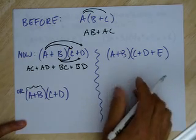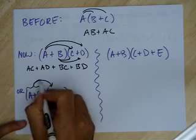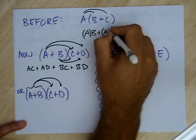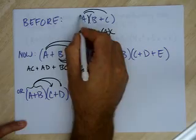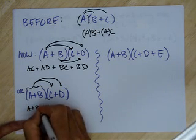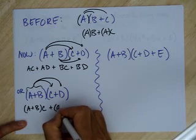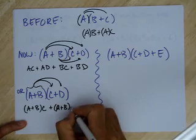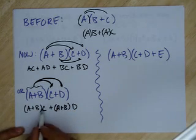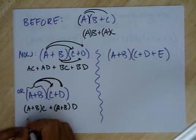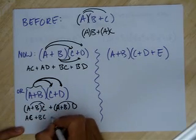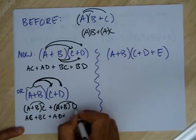If I distribute this A plus B to the C, and distribute A plus B to the D, just like we did up here — I took A and plopped it in front of the B, then in front of the C — instead I'm going to plop A plus B in front of the C, and then A plus B in front of the D. So I distribute A plus B to the C, plus A plus B to the D. Now what do we have? Another distribution: AC plus BC, plus AD plus BD.